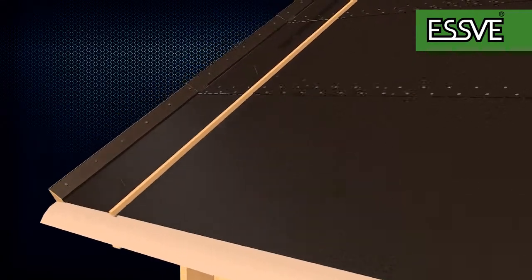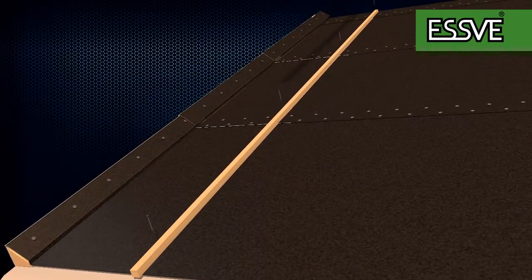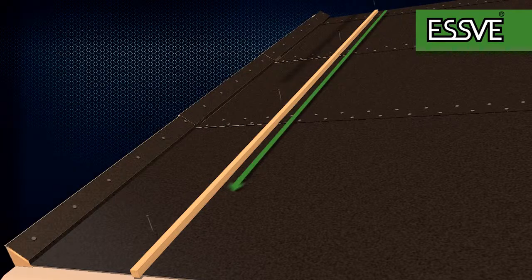The counter battens should be at least 25 by 25 millimeters and lie in the direction of the roof's pitch.